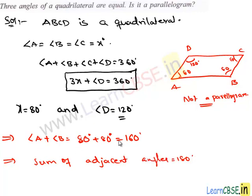Since here the sum is not equal to 180 degrees, we say that ABCD is not a parallelogram.